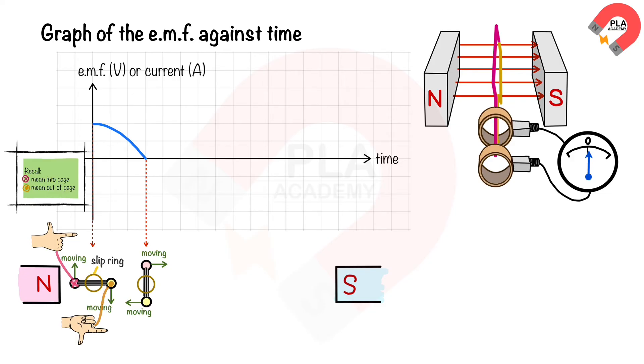The induced EMF then reverses due to the action of the slip rings commutator. The induced EMF then increases in the opposite direction and reaches its maximum again when the coil returns to horizontal position after 180 degrees of rotation. The induced current in the pink coil is out of the page and the induced current in the yellow coil is into the page.